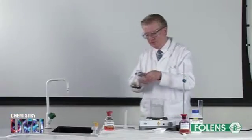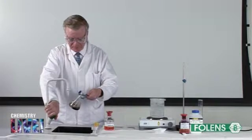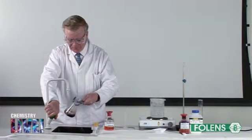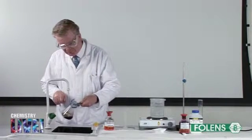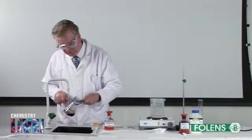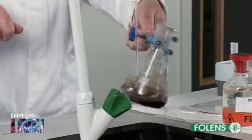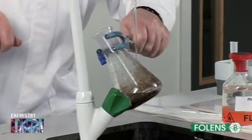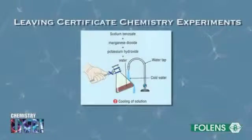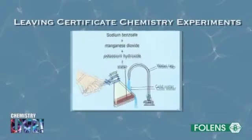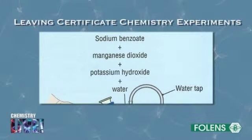A brown precipitate of manganese dioxide, MnO2, is formed, which is not soluble in water. After 20 minutes of heating, the products are cooled by running water from the tap over the outside of the conical flask. The products in the flask consist of sodium benzoate, manganese dioxide, potassium hydroxide, and water. The compound sodium benzoate is produced as an intermediate in this reaction and will be converted to benzoic acid in the next stage.